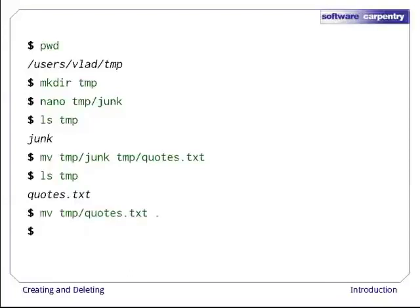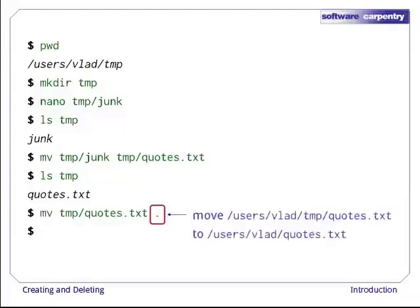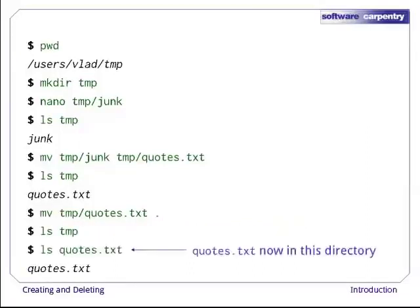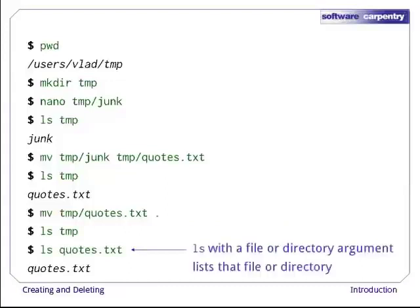Let's bring that file into the current working directory. Again we use mv, but this time the second argument is a directory. The effect is to move the file from the directory it was in to a different directory. Sure enough, ls shows us that temp is now empty, but we now have quotes.txt in our current directory. Notice that ls with a file name or directory name as an argument lists only that file or directory.